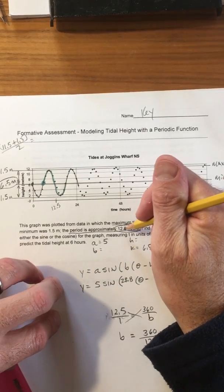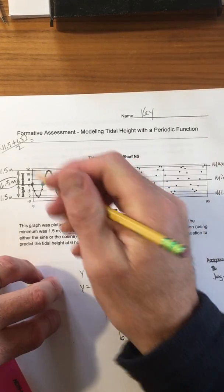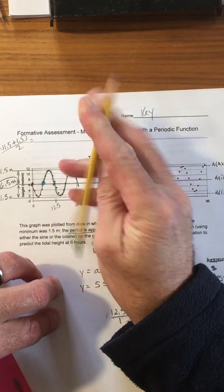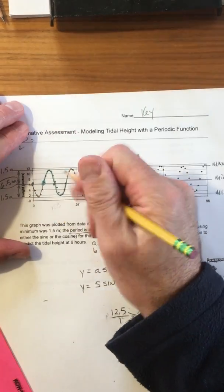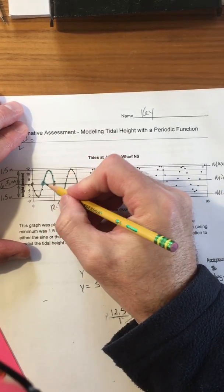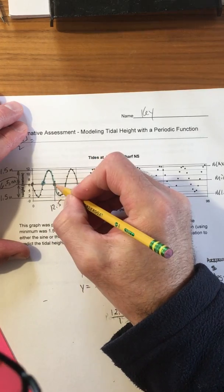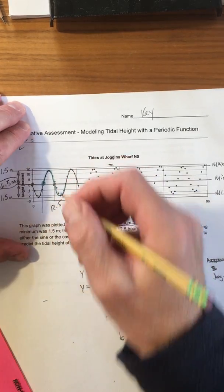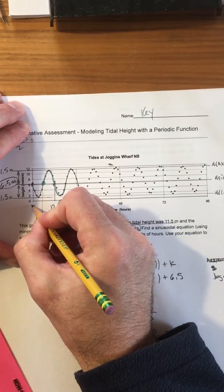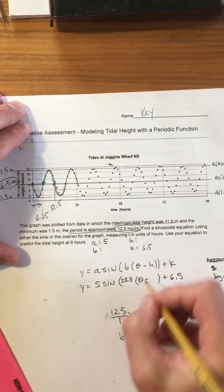If we know that the period is 12 and a half, that means that the beginning to that end is 12 and a half, so that point is 12 and a half. And so this point is halfway between zero and 12 and a half, so that's going to be 6.25 and that's the amount of horizontal shift.